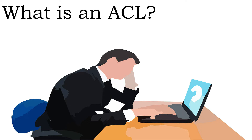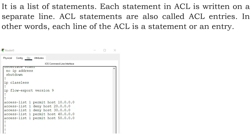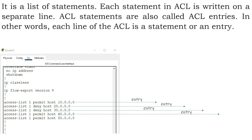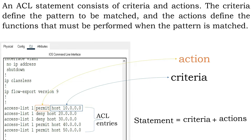What is an ACL? An ACL stands for Access Control List. It is a list of statements. Each statement in an ACL is written on a separate line. ACL statements are also called ACL entries. In other words, each line of the ACL is a statement or an entry. An ACL statement consists of criteria and actions. The criteria define the pattern to be matched, and the actions define the functions that must be performed when the pattern is matched.